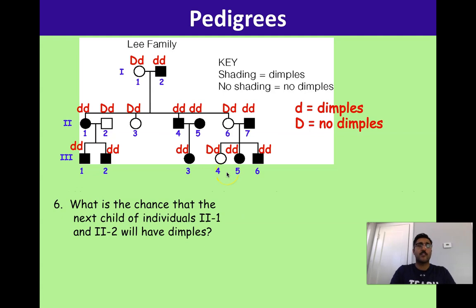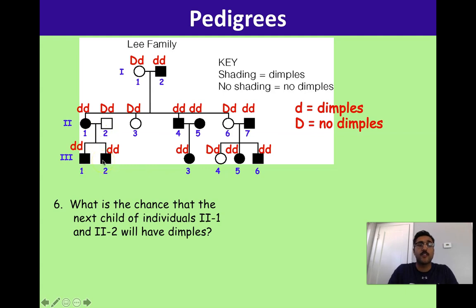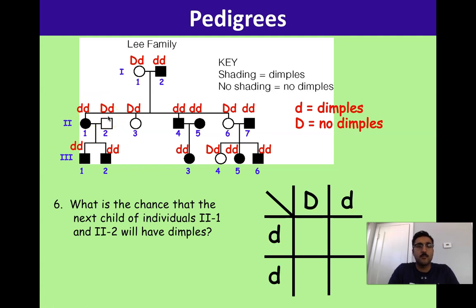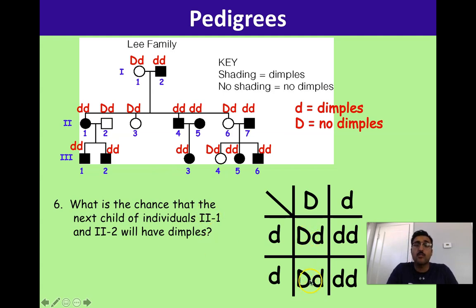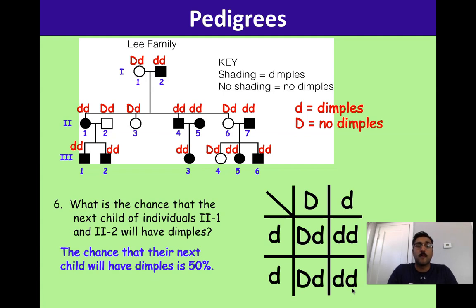Punnett square question: what is the chance that the next child of individuals II-1 and II-2 will have dimples? Both of their kids have dimples, so dad is Dd and mom is dd. Filling in that Punnett square gives two individuals with no dimples (Dd) and two with dimples (dd). There is a 50% chance their next child will have dimples.